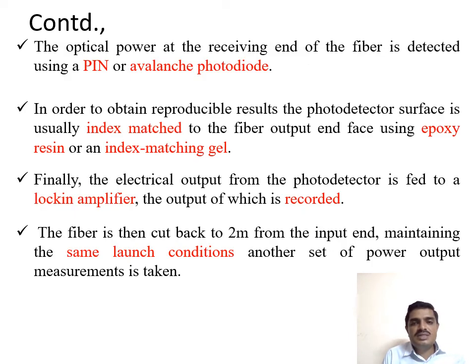The optical power at the receiving end of the fiber is detected using a PIN or avalanche photodiode. In order to obtain reproducible results, the photodiode surface is usually index-matched to the fiber output end face using epoxy resin or index-matching gel. Finally, the electrical output from the photodetector is fed to a lock-in amplifier, and the output is recorded. The fiber is then cut back 2 meters from the input end. Maintaining the same launch conditions, another set of power output measurements is taken.